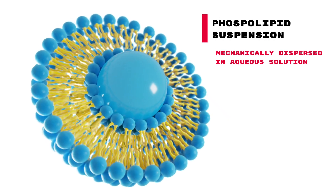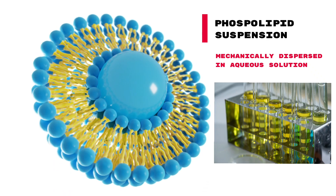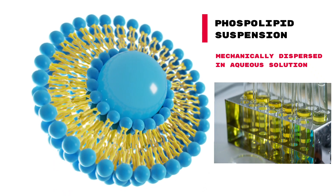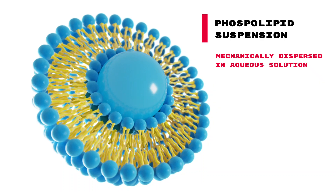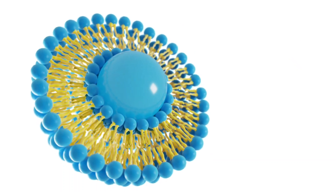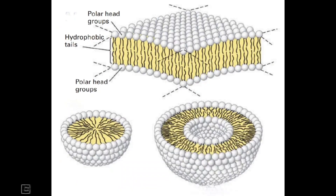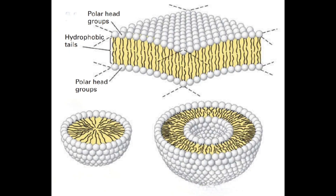When a phospholipid suspension is mechanically dispersed in aqueous solution, three kinds of structures can form: spherical micelles, liposomes, or sheet-like phospholipid bilayers that are two molecules thick.